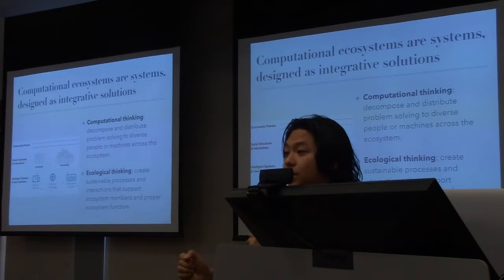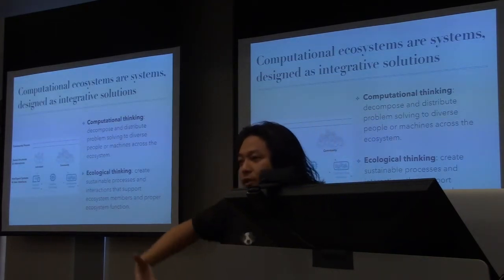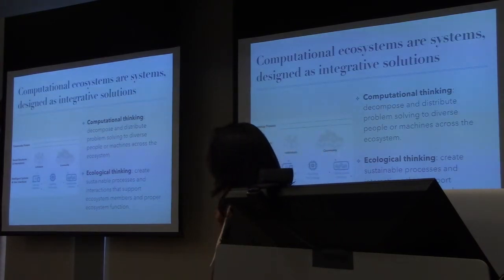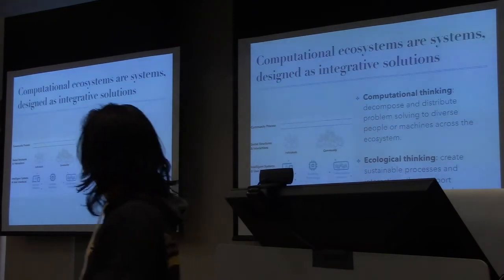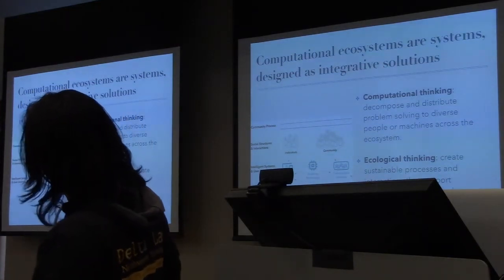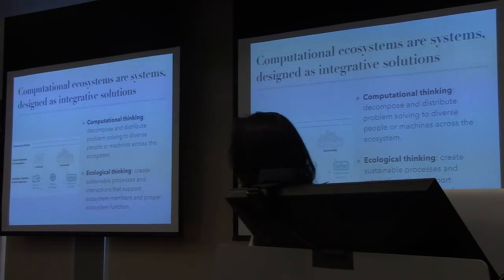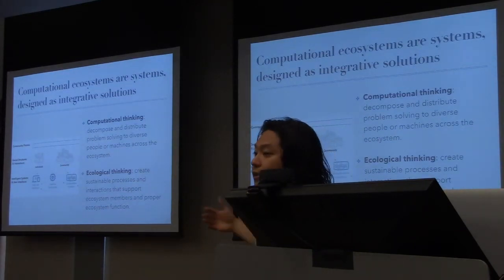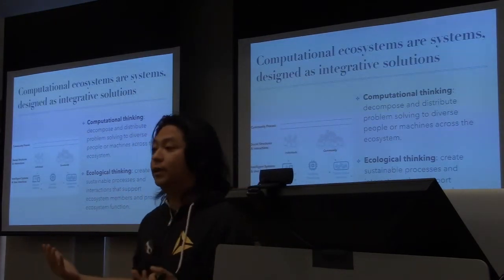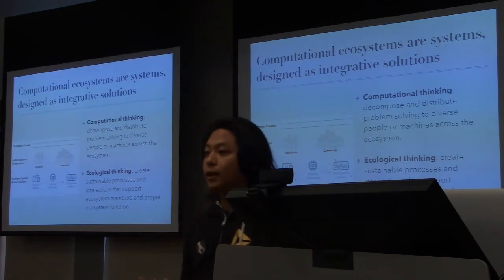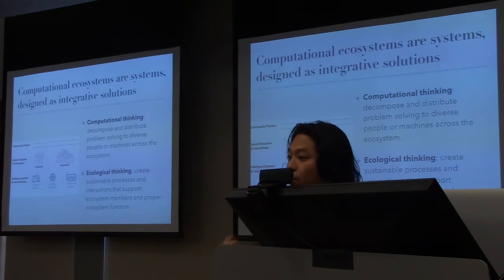I'm not only thinking about using an algorithm or doing something mixed-initiative with one human and one machine — but instead, thinking across all these interactions within an ecosystem: how am I going to leverage computational thinking broadly to solve a problem? And further, there's this idea called ecological thinking, where we need to create sustainable processes and interactions that support both ecosystem members as individuals, but also the proper functioning of the ecosystem as a whole.